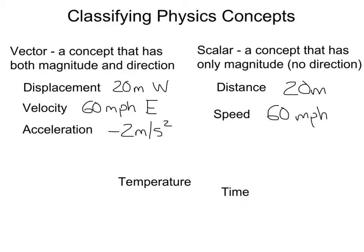What about time? Is time a scalar or a vector? Well, time is a scalar. You could say that 30 seconds have elapsed or that it's 4 p.m. That would not include a direction. You wouldn't say 4 p.m. north or south.